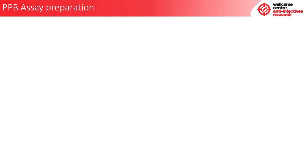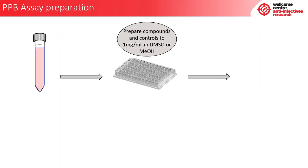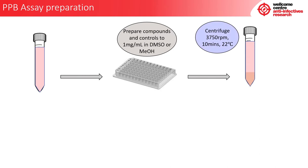Now it is the next day and we are going to prepare the PPB assay. First, remove your plasma from the freezer and let it defrost — this can take quite a while so it is advised to do this as soon as possible. While the plasma is defrosting, prepare your compounds and controls to 1 mg per ml in DMSO or methanol. Once the plasma has defrosted, centrifuge it at 3,750 rpm for 10 minutes at 22 degrees Celsius to pellet the fibrinogen.